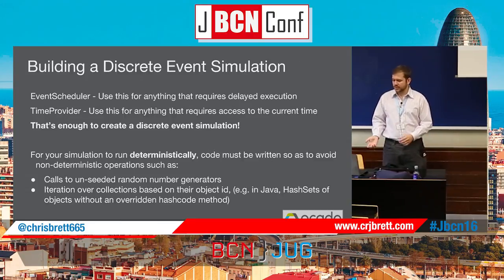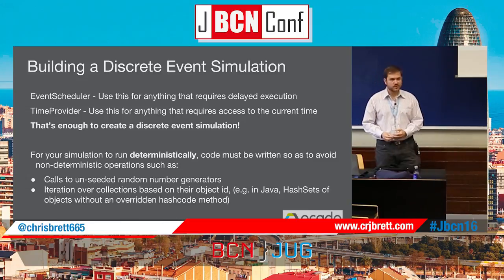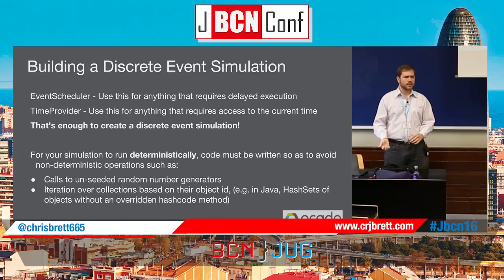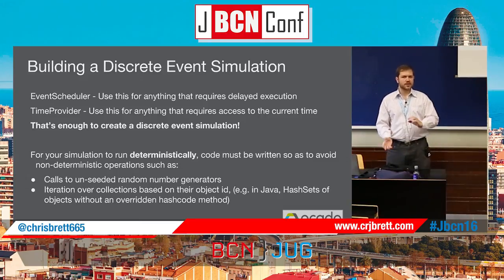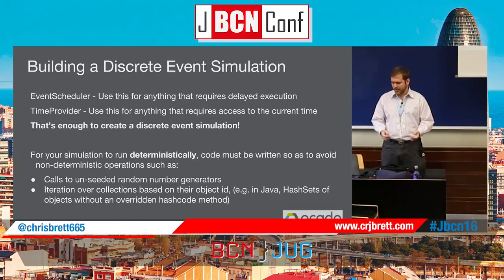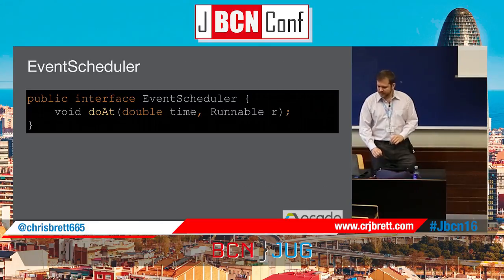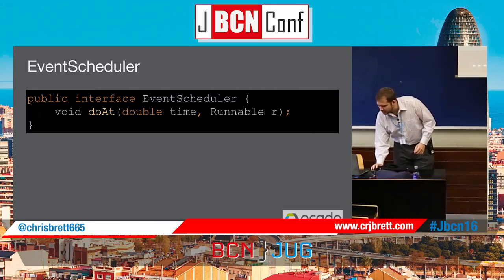To build a discrete event simulation, you need an event scheduler — the mechanism to queue up events for execution — and a time provider, which tells you the current simulation time. That's all you actually need, but to ensure determinism you must write simulation code that avoids non-deterministic operations: calls to unseeded random number generators or non-deterministic iteration orders, such as hash sets where iteration order is based on memory address. The event scheduler interface is very simple: schedule a runnable at a particular time.